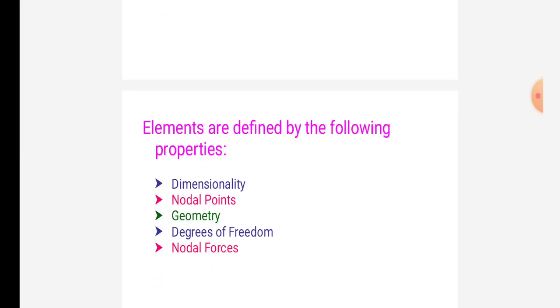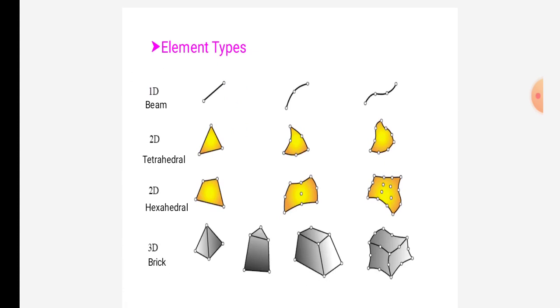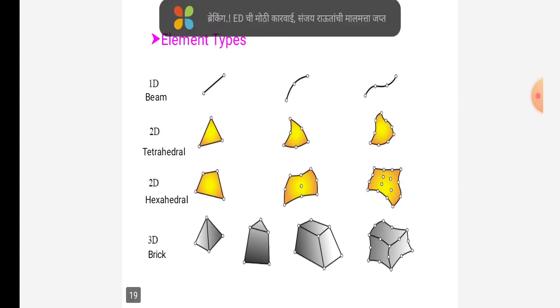Elements are defined by the following properties like dimensionality, nodal points, geometry, degree of freedom, nodal forces. These are the element types like 1D beam, 2D tetrahedral, 2D hexahedral, 3D brick. Okay, thanks.